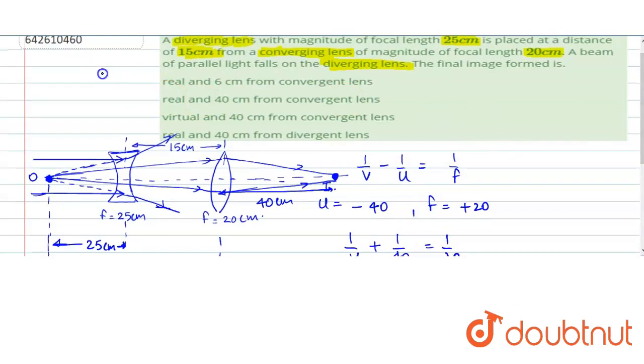So accordingly we can answer option B, that is image is real and 40 cm from the converging lens. I hope this helps you with the answer. Thank you.